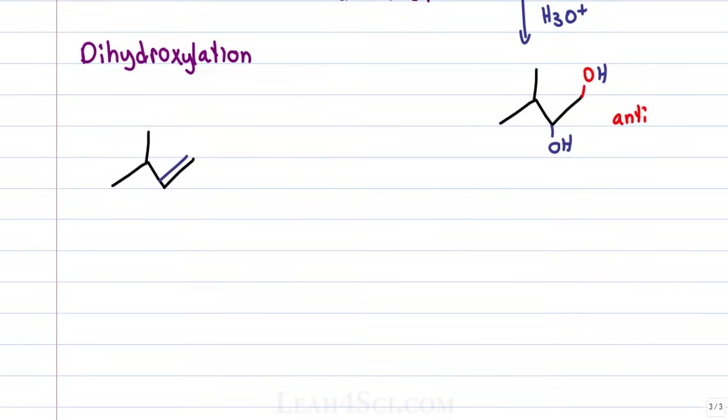There are two more dihydroxylation reactions you'll see that'll both give you a syn addition product meaning the OHs will add on the same face of the pi bond. The first one is reacting KMnO4, a strong oxidizing agent, but under weak conditions, in cold temperature and a dilute solution. The second one is OsO4, osmium tetroxide.